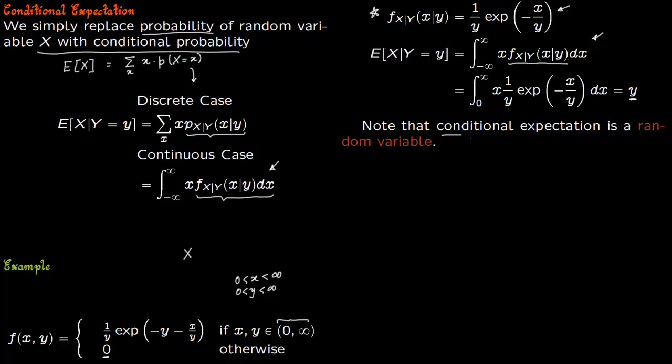Conditional expectation is a random variable. This is very important. Notice that in case you just had expectation of X, in that case, the way it works is you have integration from minus infinity to infinity.